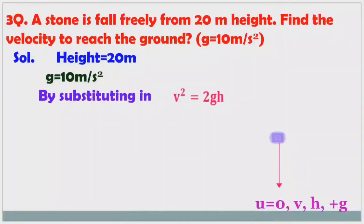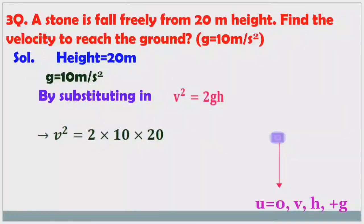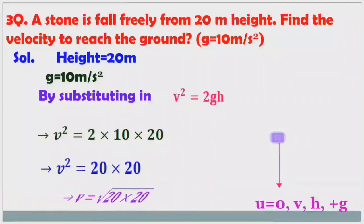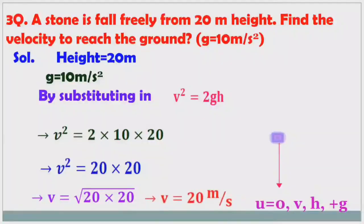Using v² = u² + 2as, and since u = 0, we get v² = 2gh. Substituting: v² = 2 × 10 × 20 = 400. Therefore v = √400 = 20 m/s. The final velocity to reach the ground is 20 m/s.